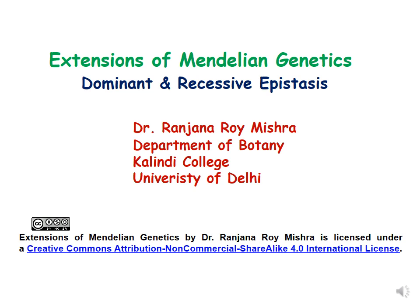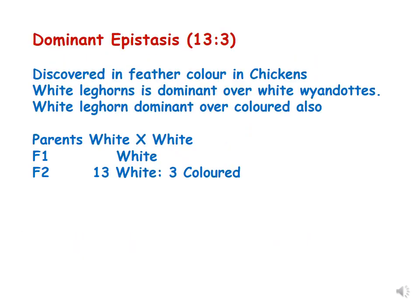Hello dear students, this is the second lecture of extensions of Mendelian genetics, and in this lecture we will be discussing dominant and recessive epistasis. In the first part of epistasis we already discussed one example of dominant epistasis — the 12:3:1 ratio — discovered by Bateson and Punnett in cocker bits. Today we will be discussing the second example of dominant epistasis, the 13:3 ratio, which was discovered in feather colors in chickens.